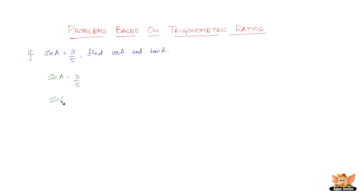The definition of sine of any angle is opposite by hypotenuse. According to the given data, the opposite is 3 and the hypotenuse is 5. Let us draw a right angle triangle ABC with the right angle at B and angle A at vertex A. Sine A equals 3 by 5, so the opposite side to A is CB, which is 3, and the hypotenuse AC is 5.